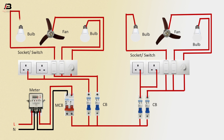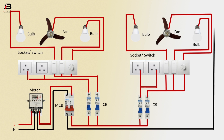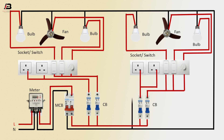Neutral connection from the MCB circuit breaker connects to all loads, like room one bulb, room two bulb, and fan. Neutral connection also goes to all room socket neutral points.